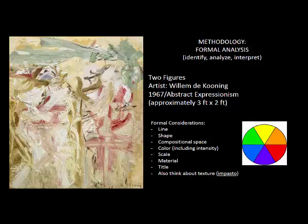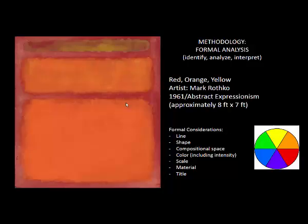For Rothko we could talk a little bit about texture — it's soft, it's hazy. Here, with de Kooning, if you look up close, the paint is thick — the brushwork is not blended like Rothko's was. It's really built up. This type of brushwork is called impasto. So de Kooning uses an impasto stroke.